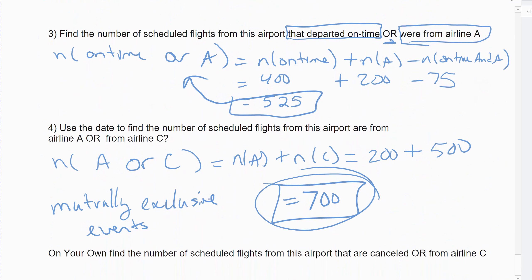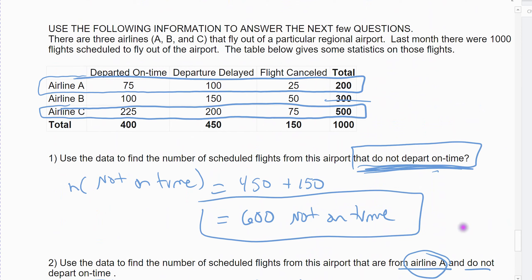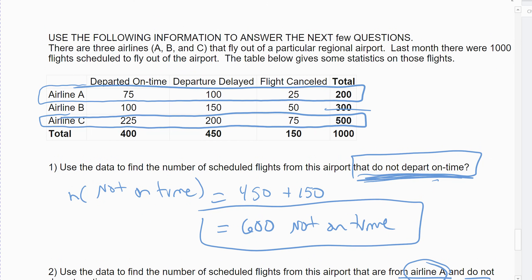Either way, 700 is the right answer. On your own, try the OR example that is not mutually exclusive — make sure you're careful not to count the flights cancelled from airline C twice. That finishes up section 7-1. Nothing really new there; we reiterated some things from chapter 6, reminded you of the notation. The new terminology is that events can be used in place of subsets, and we'll use tables instead of Venn diagrams. In the next set of notes, we start into the basics of probability.